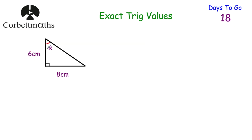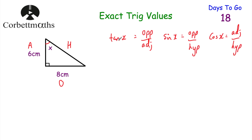Now for the other triangle — we want to find the size of angle x. Let's label our sides: opposite the right angle is the hypotenuse, opposite the angle we're finding is the opposite, and the other side is the adjacent. Jotting down our trig ratios: tan equals opposite over adjacent, sine equals opposite over hypotenuse, cos equals adjacent over hypotenuse. In this question we're going to be using the opposite and the adjacent, so we're not using the hypotenuse — cross it off.